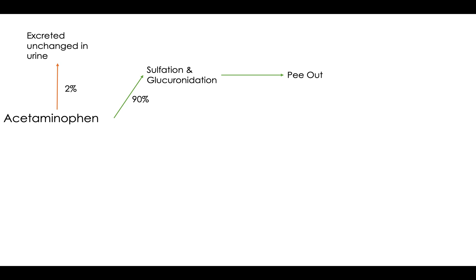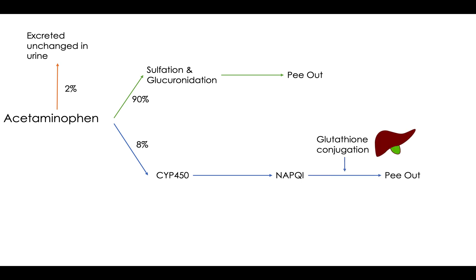What about the next 8%? That 8% is going to go through the CYP450 system and be converted to NAPQI. That NAPQI is too big to be excreted, so it has to be conjugated with glutathione, which is made in the liver. Once you conjugate it with glutathione, you can pee out the rest of this acetaminophen. And this is just the normal breakdown of acetaminophen.